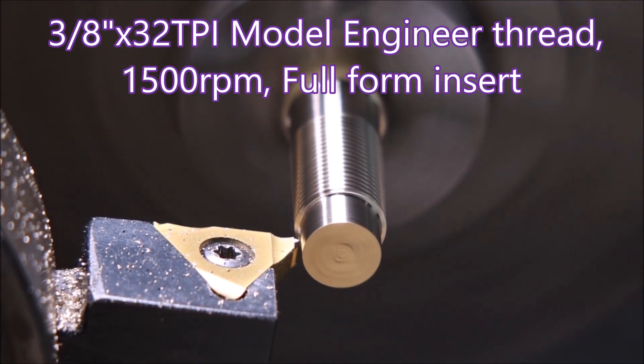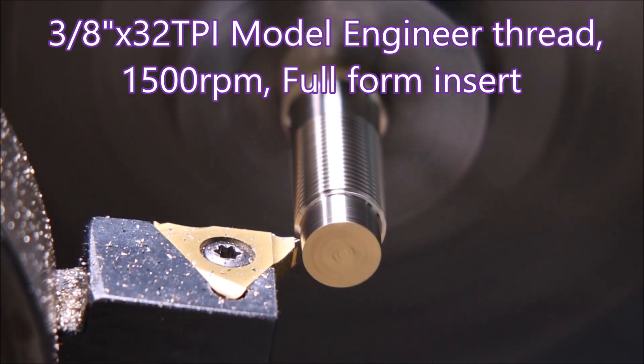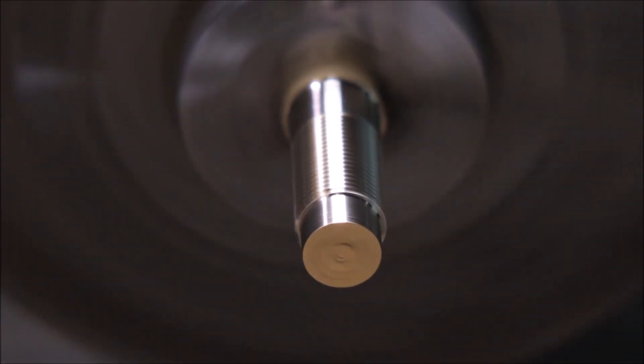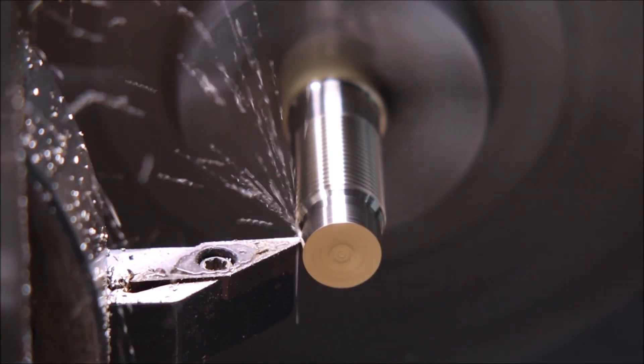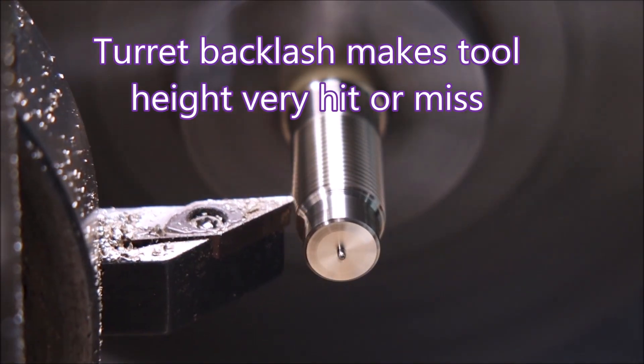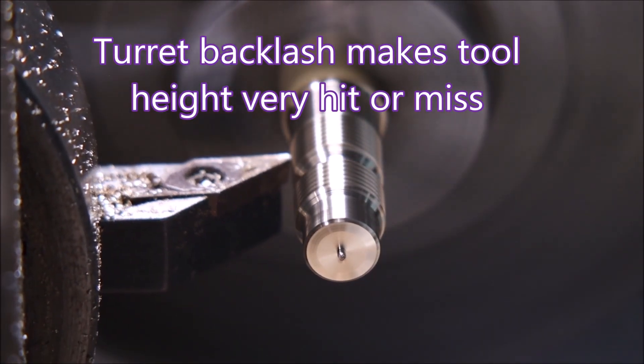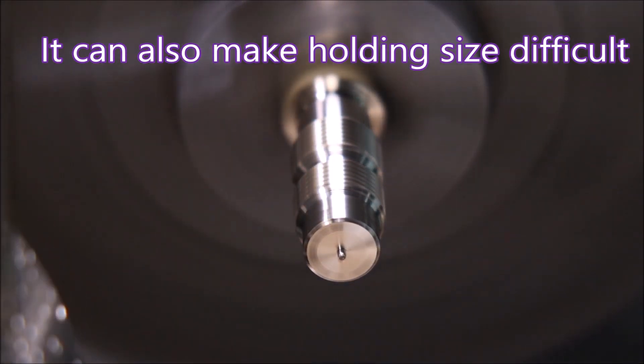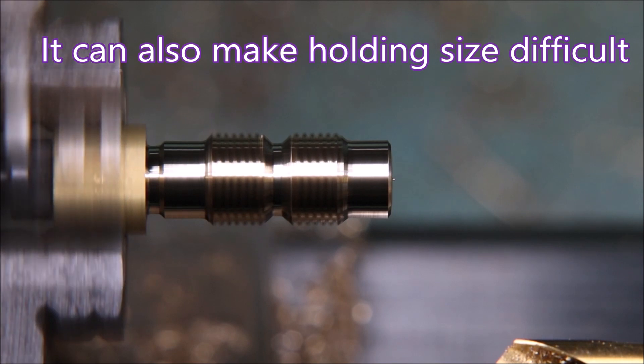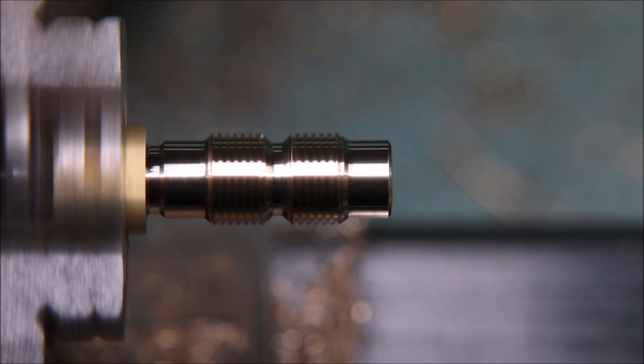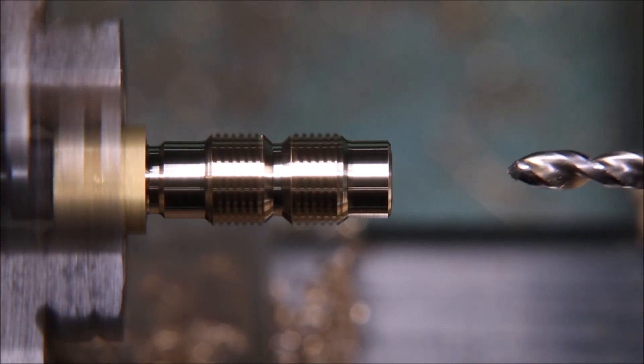Oh yes full form inserts, if you haven't tried them and you think there's a thread pitch that you might be able to use in a few different sizes you should really try it. They are just great, they make you a great thread. Just cut full depth, get the diameter you want and you've got a perfect thread. I've cut everything using a 1mm pitch insert from M6 through to M20 and any number of them in between. They're just amazing.